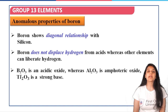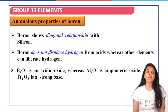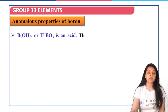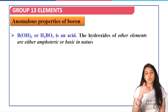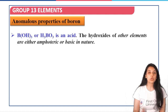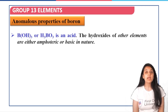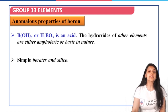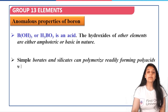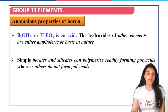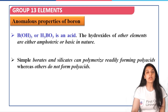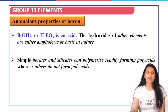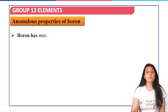B2O3 is an acidic oxide whereas Al2O3 is amphoteric and thallium oxide is a strong basic oxide. Boron hydroxide, written as B(OH)3 or H3BO3, is acidic, whereas the hydroxides of other elements are either amphoteric or basic. Simple borates and silicates can polymerize readily forming polyacids, whereas other elements do not form polyacids — this relates to the diagonal relationship between boron and silicon.